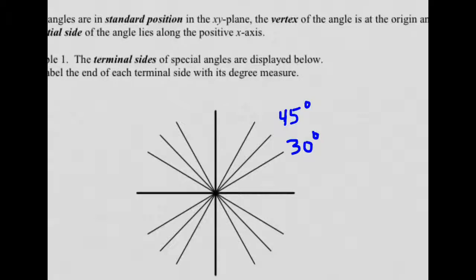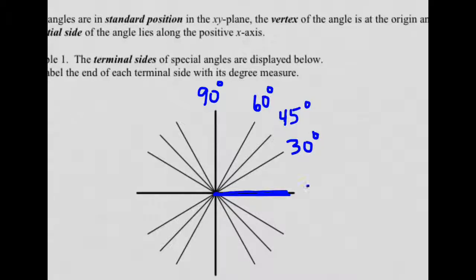This next angle with the terminal side right here is a 60 degree angle — another special angle. And then the angle that goes all the way from the x-axis over to the y-axis is a 90 degree angle. Those are all your special angles in the first quadrant, at the edges of the quadrant, with the exception of 0, which I didn't label. Zero degrees would have both its initial and terminal side along the x-axis, so we label these by their terminal side.